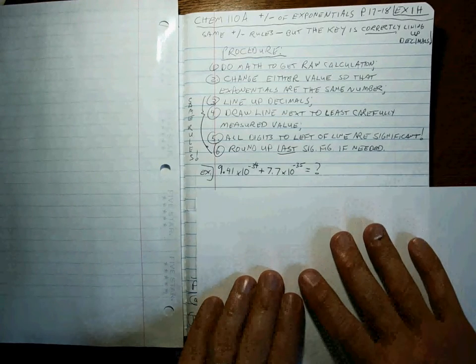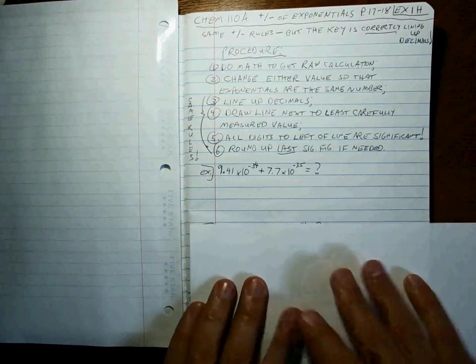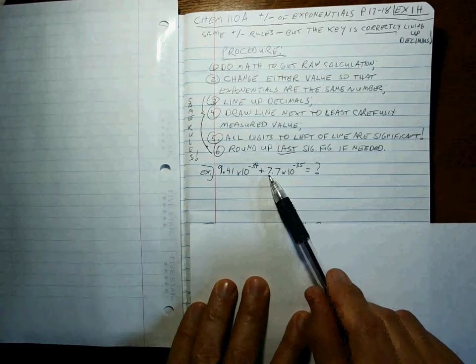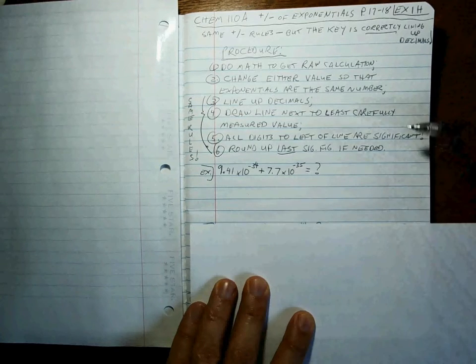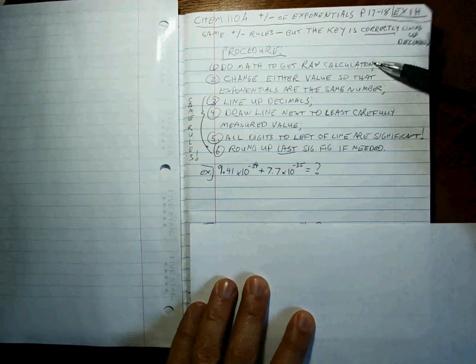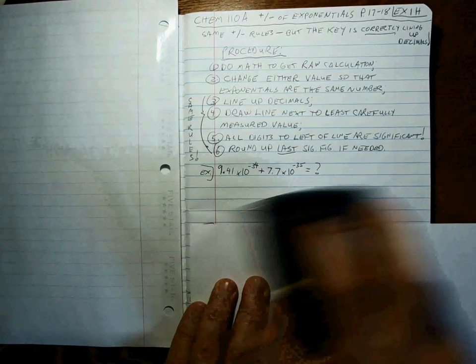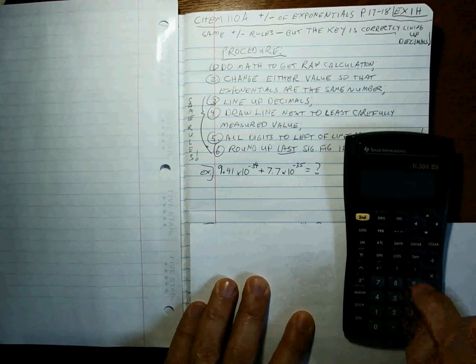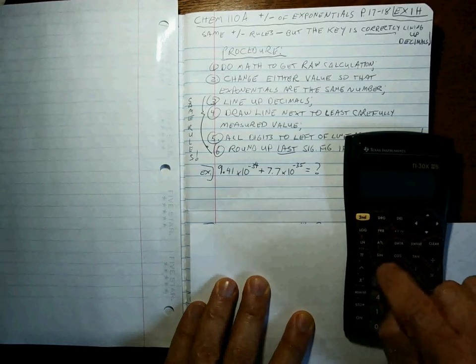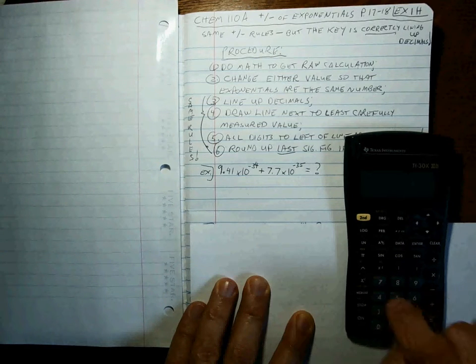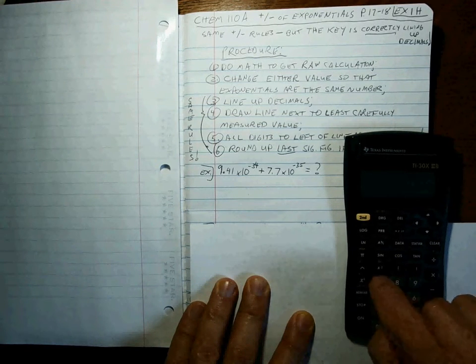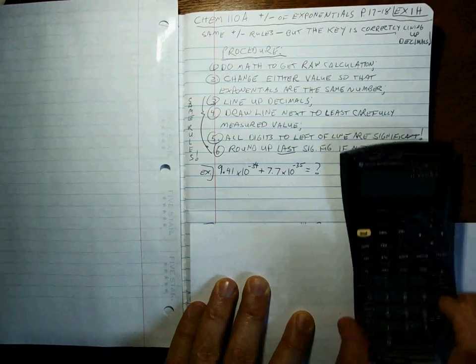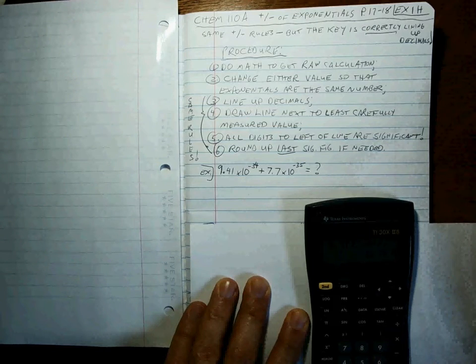Alright, so let's do a couple of practice problems. Here's the first one: 9.41 times 10 to the minus 34 plus 7.7 times 10 to the minus 35. Your job, first, is to do the raw calculation. So let's punch that into the calculator. See what we get.